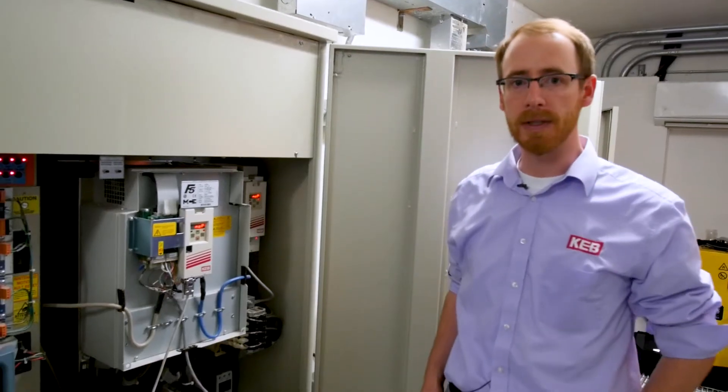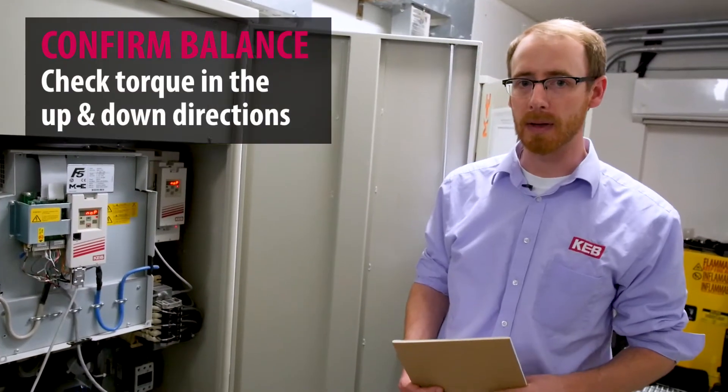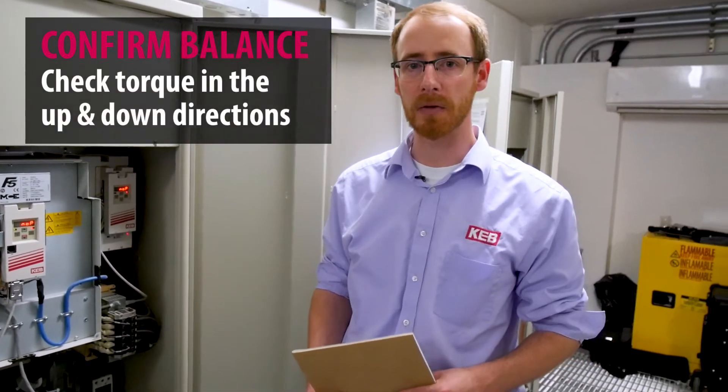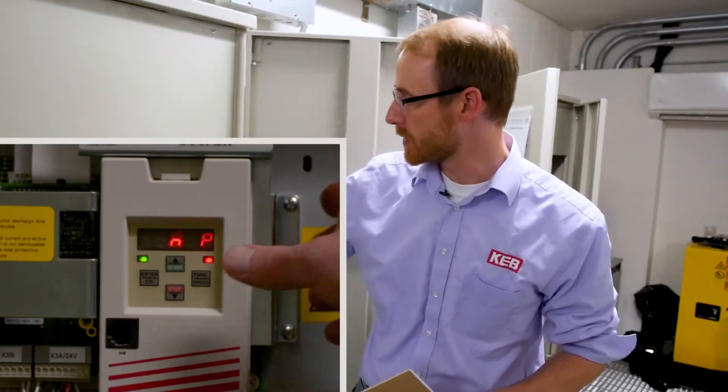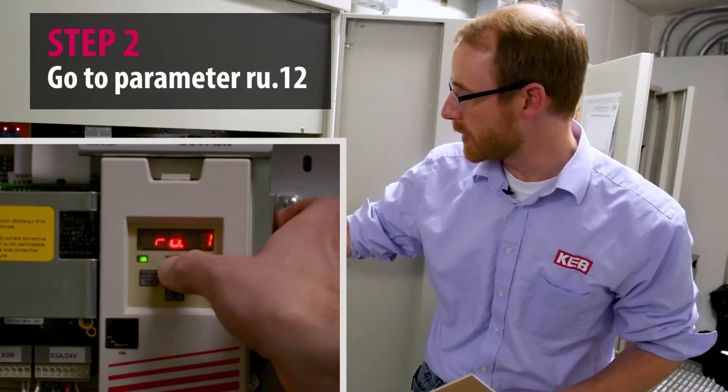To start out, we need to put balanced weight in the car. We'll need to confirm that the car is balanced by looking at the motor torque in both the up and down direction on inspection speed. So we'll start by going to parameter RU12 to display the torque.